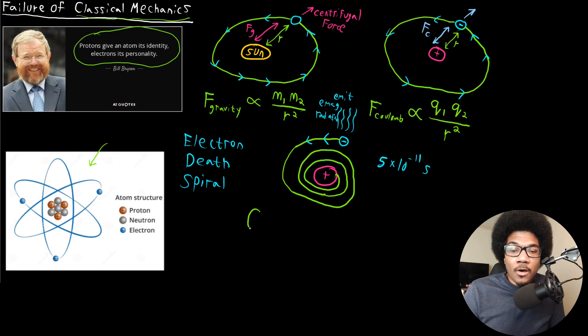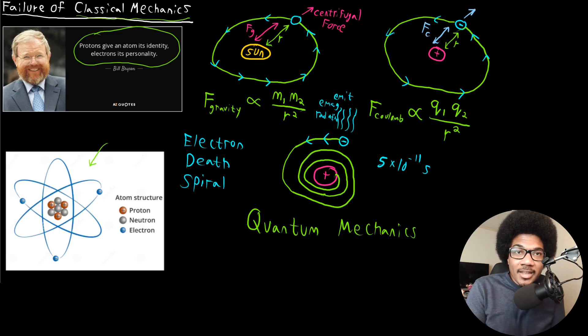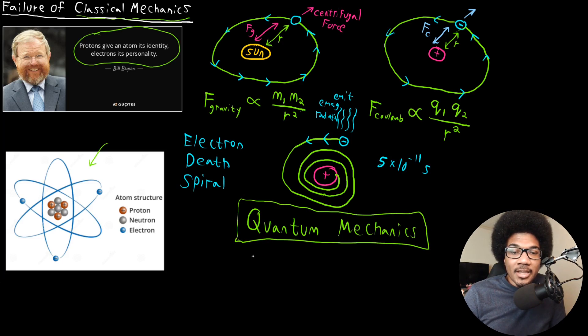So what was necessary was to come up with a new physics to describe these types of problems. That physics was called quantum mechanics, or I should say is called quantum mechanics. And quantum mechanics is essentially just the physics of really, really small particles, and an electron fits in that category. And quantum mechanics is able to accurately describe the motion of the electron around a nucleus, able to describe the properties of the electron in a more accurate way, compared to what you get from classical mechanics.